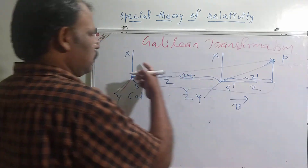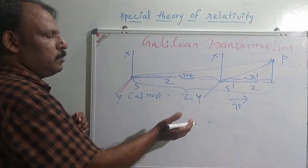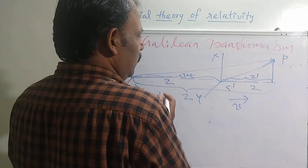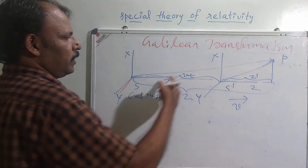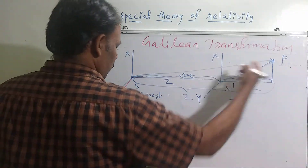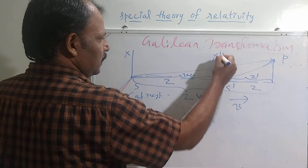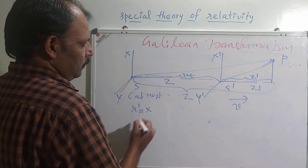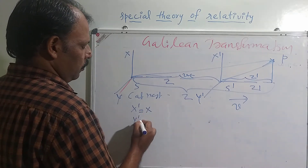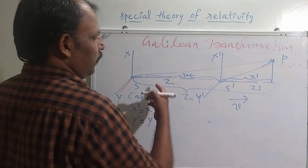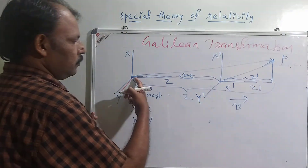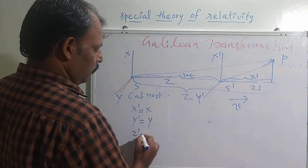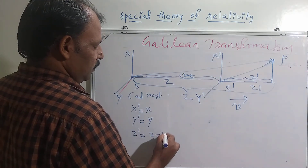The X coordinate remains the same because there is no motion along the X direction, and similarly along the Y direction. So the X and Y coordinates remain the same. We can write the coordinate transformation as: X prime equal to X, Y prime equal to Y. For Z prime, the total distance is Z and the distance traveled by the frame is VT, so Z prime equals Z minus VT.